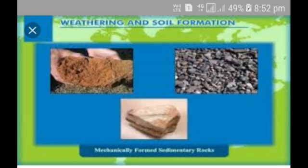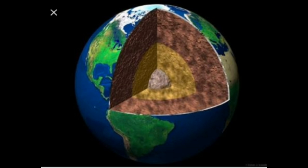Rocks are naturally occurring solids made up of one or more minerals. Rocks may be hard and compact like granite, soft like clay, or powdery like sand. Some rocks like limestone are composed of only one mineral, while some like granite are composed of many minerals. Most rocks are made of minerals like silica, quartz, and feldspar.